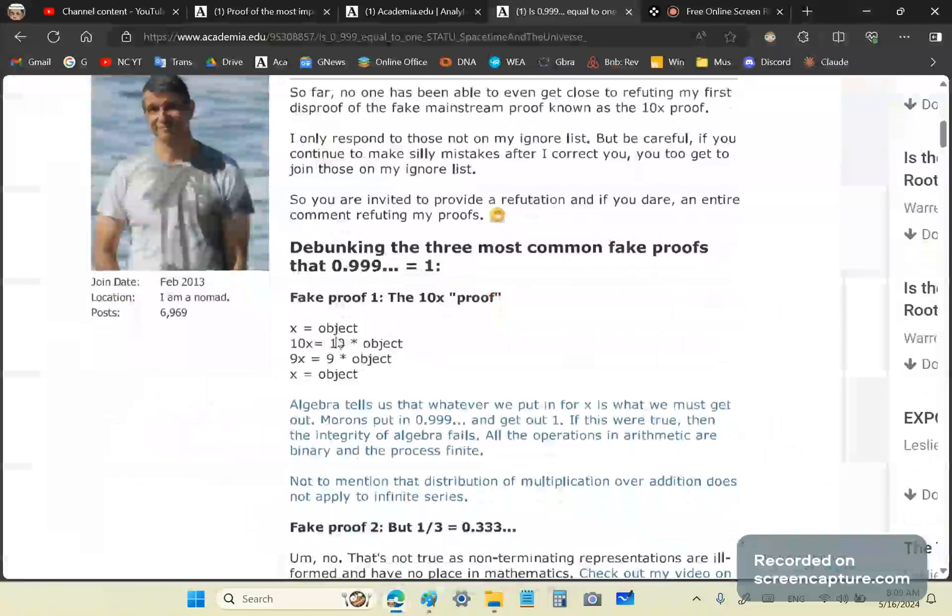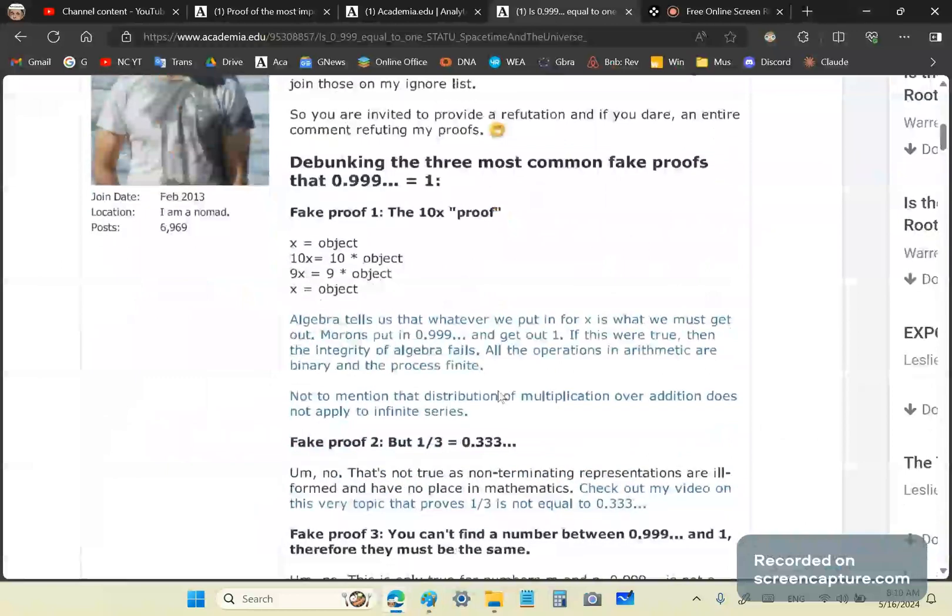That is, if you put an object into x, you multiply the object by 10, and you subtract this first line from the second line, you'll get 9x is 9 times object. So, what you get out should be exactly what you put in. That's what algebra tells us. And if this were true, then if it were true that you put in 0.999... and you get 1, then the integrity of algebra fails. All operations in arithmetic are binary. Did you hear that? All operations in arithmetic are binary and the process finite. There's no such thing as infinite arithmetic.